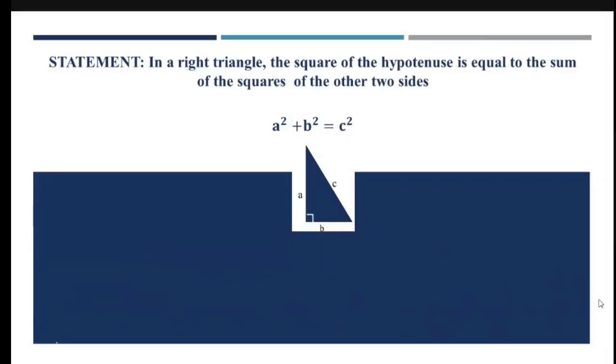The statement of the Pythagoras theorem: in a right angle triangle, the square of the hypotenuse is equal to the sum of the squares of the other two sides. So if I have this triangle with sides A, B and the hypotenuse as C, then by Pythagoras theorem, A² + B² = C².